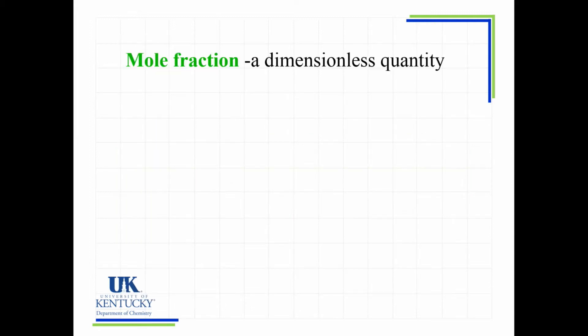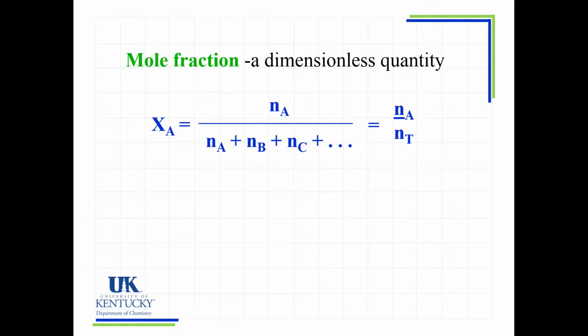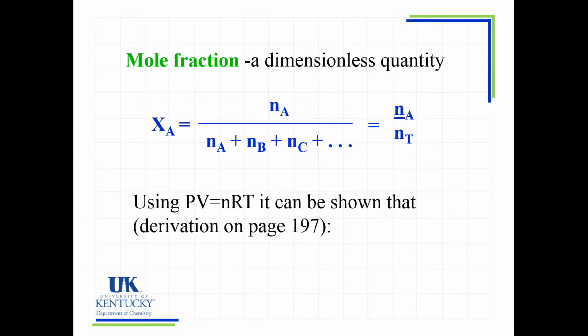Another way to find a partial pressure is to know the fraction of that gas in the mixture. There's something called a mole fraction - it's a dimensionless quantity because the units cancel out. A fraction is always the part over the whole, so the mole fraction is the moles of the gas we're interested in, say gas A, over the total moles. Since both numerator and denominator have units of moles, they cancel each other out.